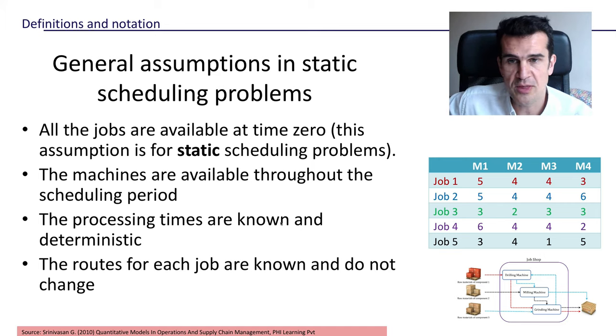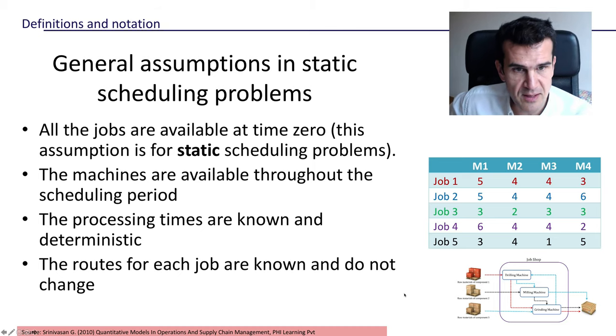We're also going to assume that the machines are always available throughout the scheduling period, that the processing times like the ones we saw in the previous video are known and deterministic, and the routes for each job are known and they do not change.